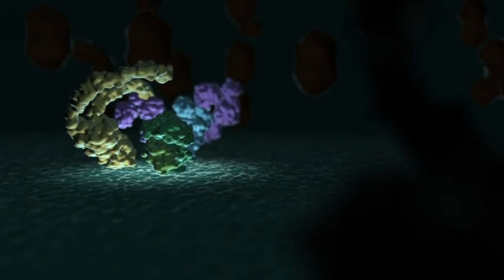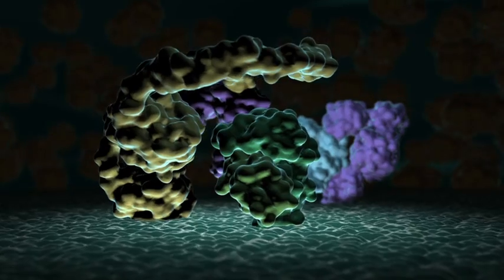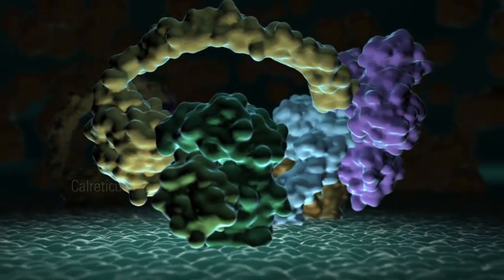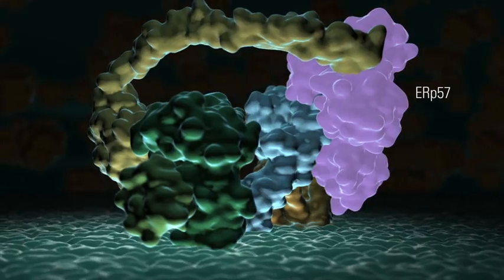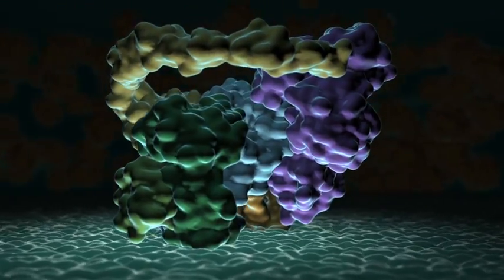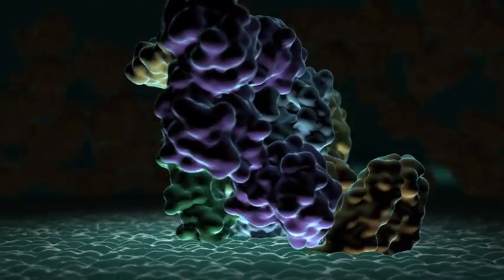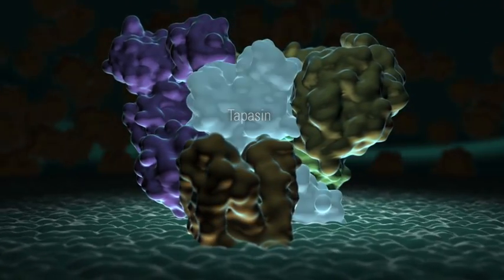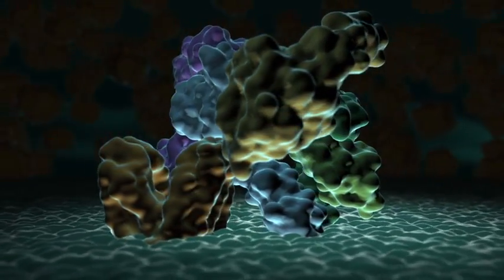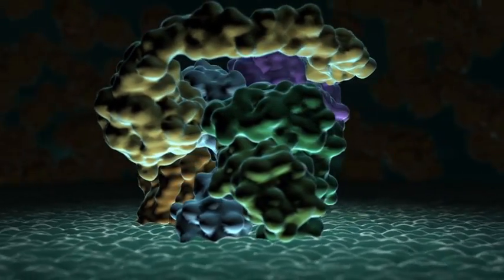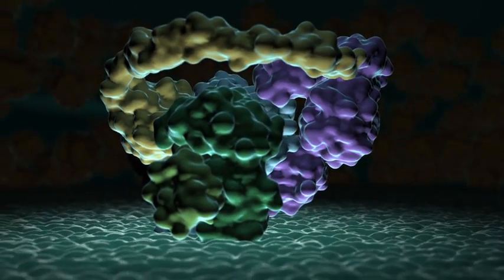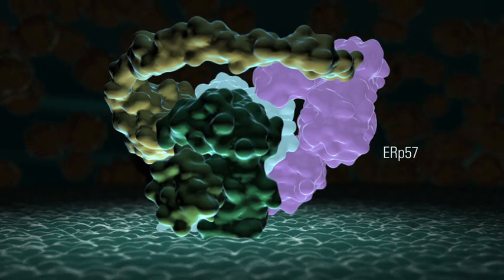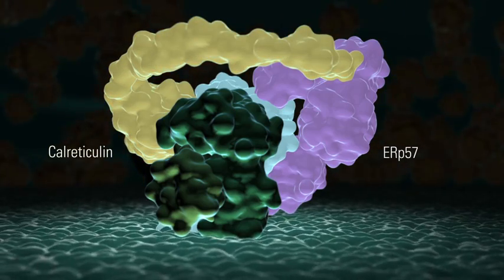Within PLC, calnexin is replaced by calreticulin, a closely related chaperone that also binds ERP57. The remaining components of the PLC are the TAP transporter and a remarkable protein called tapasin, which plays several roles in the stability and function of the peptide loading complex.